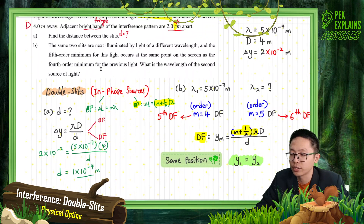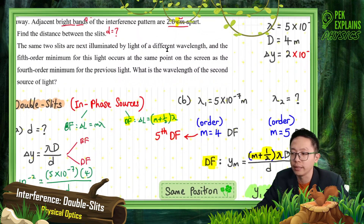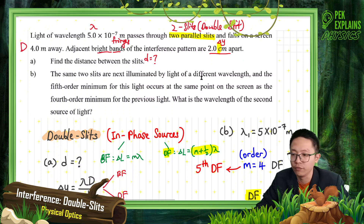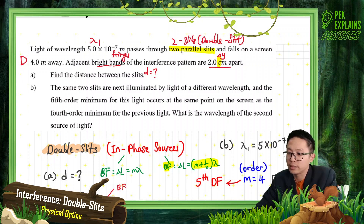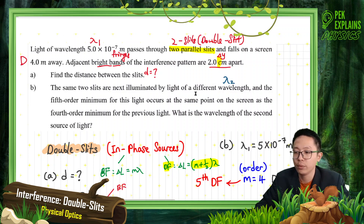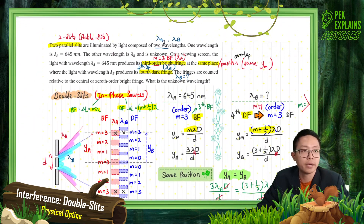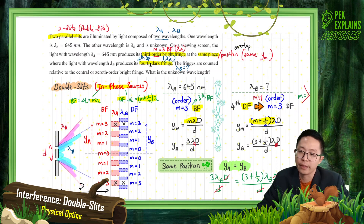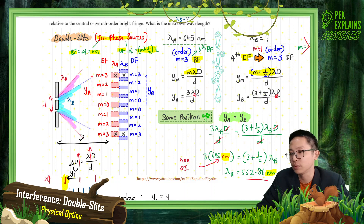Now let's look at part B. The same two slits are illuminated by a light of different wavelength. So now we have a different wavelength — the previous one becomes λ1, and now we have λ2. This is the same kind of question as before, where we had λA and λB at the same position, meaning YA equals YB.